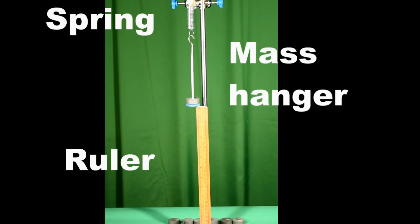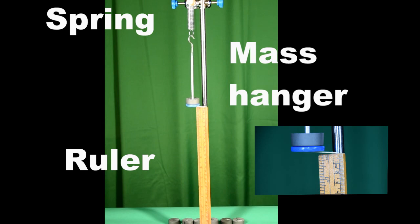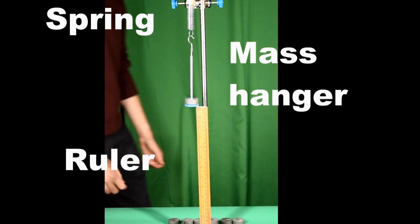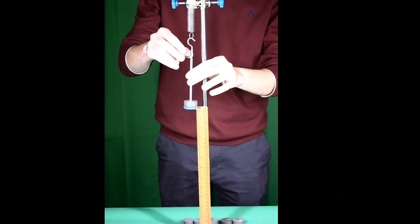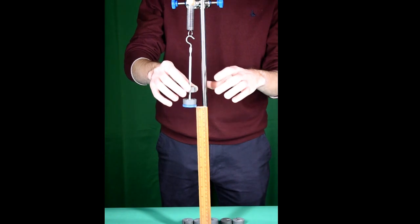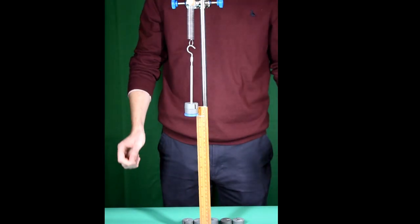The spring is suspended from a clamp stand with a mass hanger hanging from the bottom. 50 gram mass has already been added. The hanger is set up at zero, so 50 grams is now added and the extension recorded.